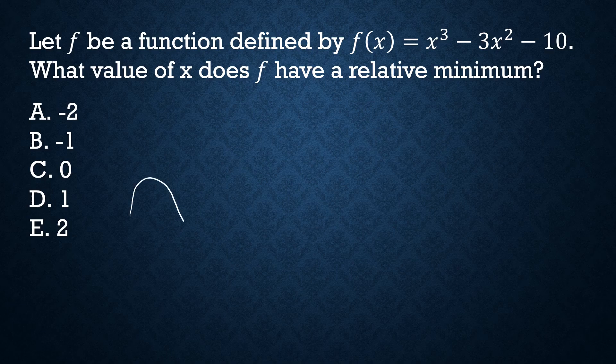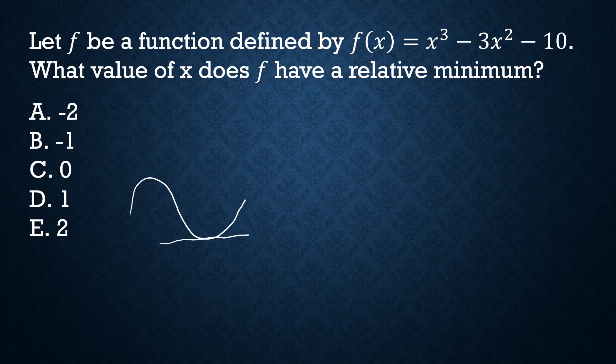So for some graph, at the relative minimum, there will be a tangent line that is there. You also have one at the relative maximum. You have a tangent line there. So we can find out where these tangent lines are. We can find out where the relative minimum or maximum is.